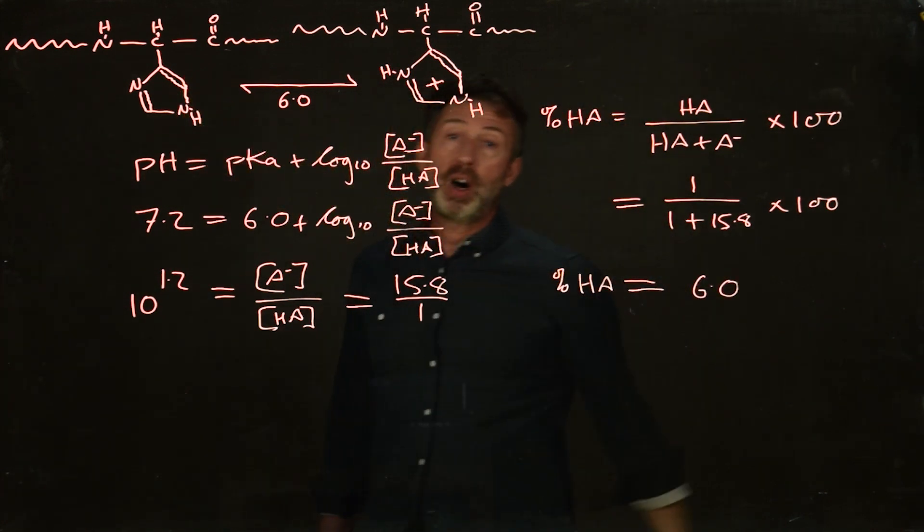you will find that it says 6.0. So that means that at pH 7.2, the percentage of side chains which are ionized is 6%. So 6% are ionized, which means that 94% are not ionized.